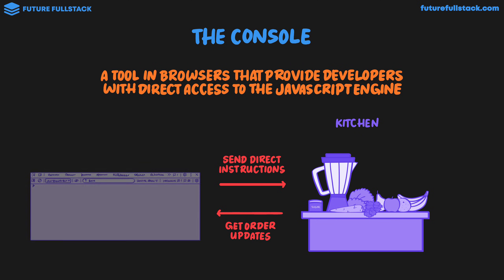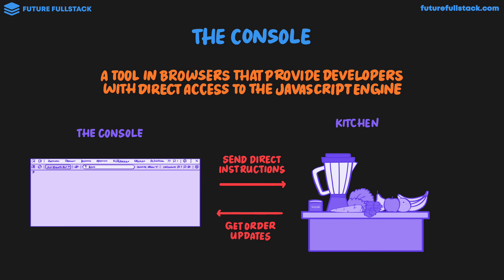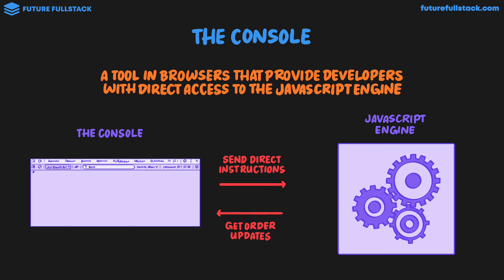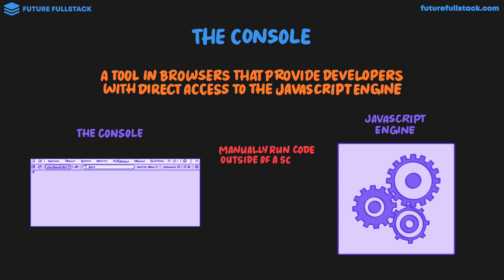In terms of JavaScript, the console does the exact same thing with the JavaScript engine, which we can't see but is inside the browser. Using the console, we're able to manually run code outside of a script, and we're also able to view log messages outputted from scripts. Log messages are written inside scripts and provide us with important messages about how our code is running.